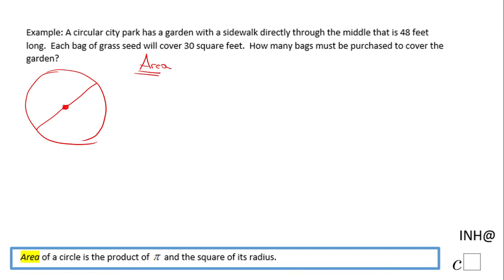For that reason, I'm going to use the area of a circle formula. You can see down here on the bottom: the area of a circle is the product of π and the square of its radius. We need the radius here. We know this sidewalk is 48 feet long, and that 48 is the diameter of this circle. So half of 48 will be 24—that is the radius. We can write that here: radius equals diameter divided by 2, and we get 24.